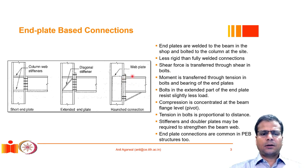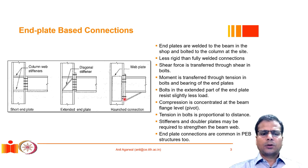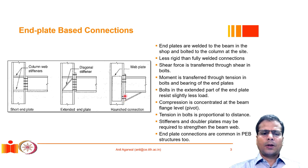In such connections, whatever shear force demand exists is transferred directly through the bolts acting in shear. The bolts also go into tension to resist the bending moment demand. Bolts cannot resist compression, so compression demand is handled through bearing — for example, the bottom flange or haunch bears directly against the column. This establishes the pivot point and allows a lever arm to develop so the bolts act in tension.